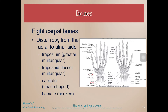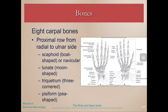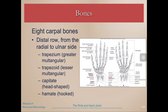Going back to shade them in — the scaphoid, lunate, triquetrium, and pisiform make up the proximal row, visible in this picture. And for the second distal row, we have trapezium, trapezoid, capitate, and hamate.